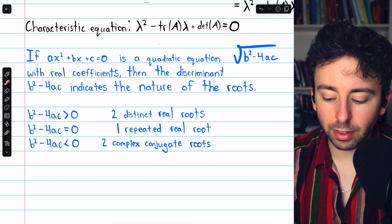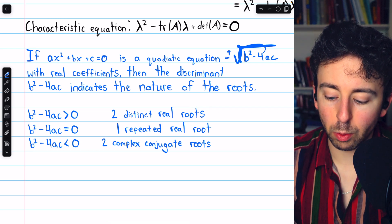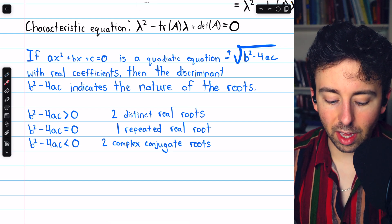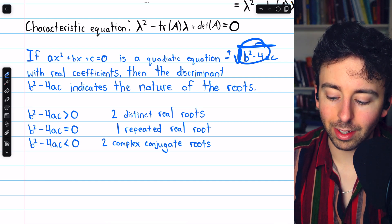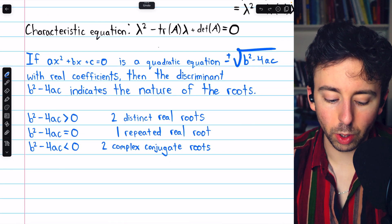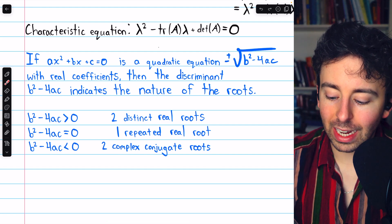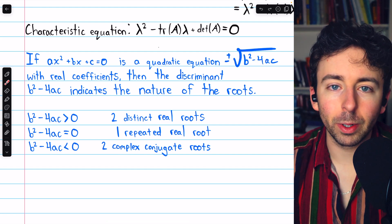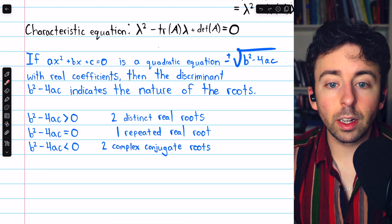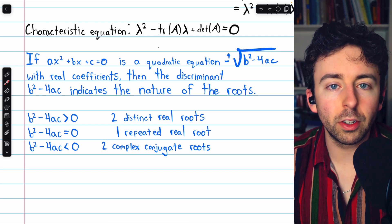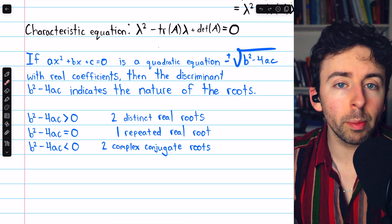If b² − 4ac is positive, the equation will have two distinct real roots — because plus or minus the square root of a positive number gives two distinct real roots. If b² − 4ac equals zero, there will be just one repeated real root. But if b² − 4ac is negative, we'll have two complex conjugate roots, because we'd have plus or minus the square root of a negative number — an imaginary number — giving two complex conjugates because of the ± imaginary part. The characteristic equation of a general 2x2 matrix is no different; it's just another quadratic with real coefficients, so we can analyze the discriminant in the same way.